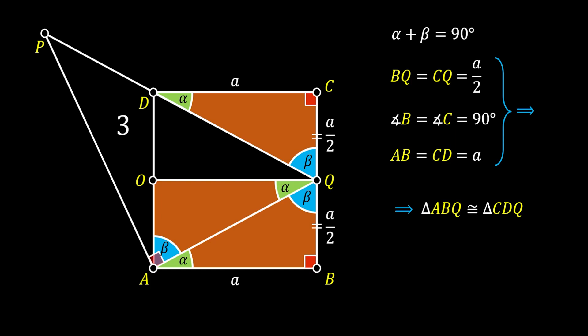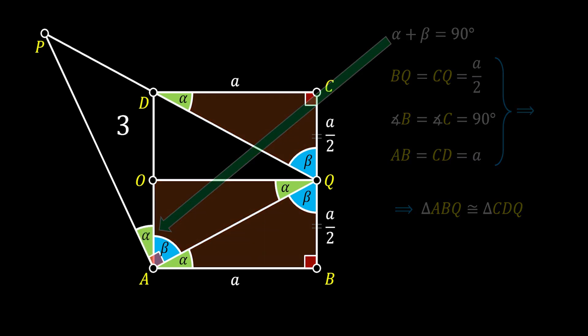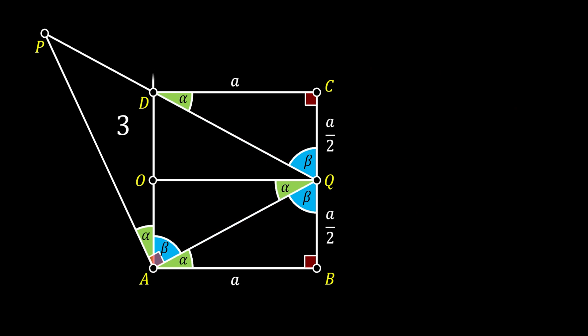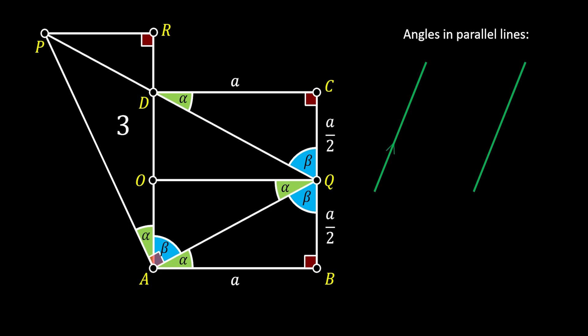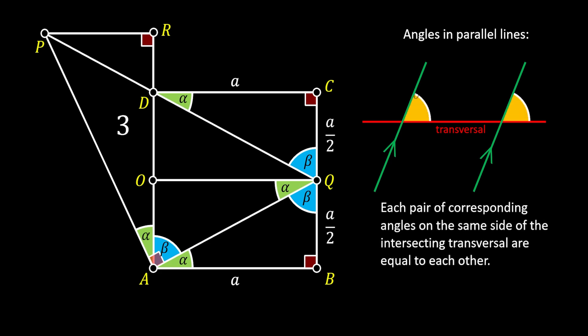Notice the right angle at point A — it consists of angle beta, and since the sum of angles alpha and beta is 90 degrees, the remaining acute angle PAD must be equal to alpha. Now let's extend the side AD of our square vertically up, and pull a perpendicular which connects this line to the point P. In this way we get a nice right-angled triangle, and we label the remaining vertex of this triangle as R. We're going to use an interesting theorem about angles in parallel lines: if we have two parallel lines and pull a transversal through them, then each pair of corresponding angles on the same side of the transversal are equal to each other.